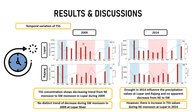However, there is no distinct trend, and the drop in 2014 influenced the precipitation values in Lupa and Rajang. There is no apparent decrease from the northeast monsoon, as shown in both charts. However, there is an increase in TSS value during the northeast monsoon at Lupa in 2014 despite being in a drop condition.